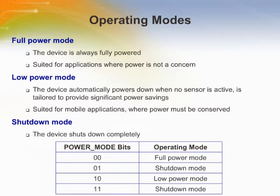The AD7147 has three operating modes. In full power mode, all sections of the device remain fully powered and converting at all times. It is suited for applications where power is not a concern, such as game consoles that have an AC power supply.